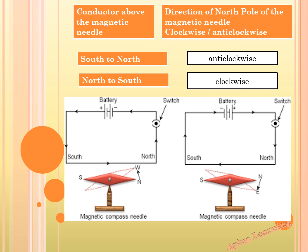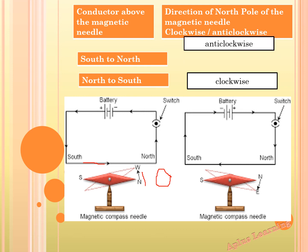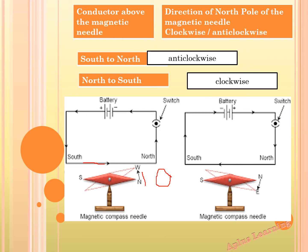It is understood that a magnetic field is developed around a current-carrying conductor. Let's consolidate: when the conductor current flows from south to north, the deflection is from north to west — that is the anti-clockwise direction. When the current flows from north to south, the magnetic needle deflects from north to east — that is the clockwise direction.